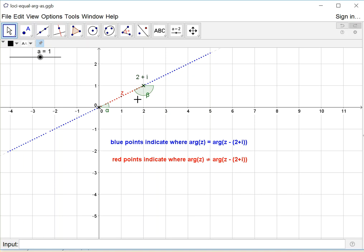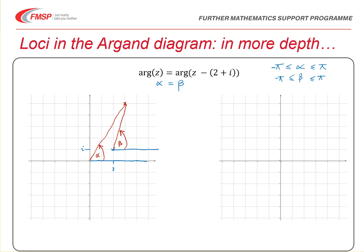Going back to our original diagram, we can see which points we can accept to form the final locus. The origin and 2 plus i are marked, and the locus is formed by two straight lines — to the right and to the left — but with a gap in the middle. The two points themselves are not included, because one or other of the arguments is undefined at those points.